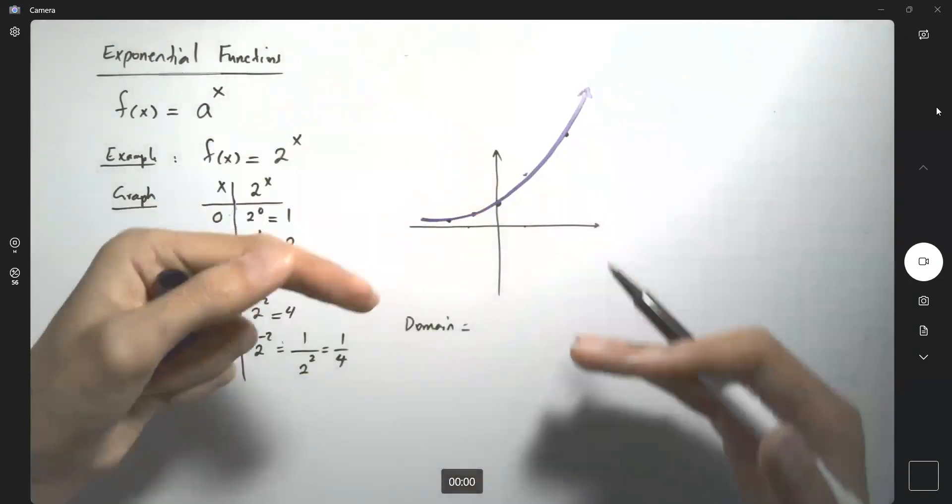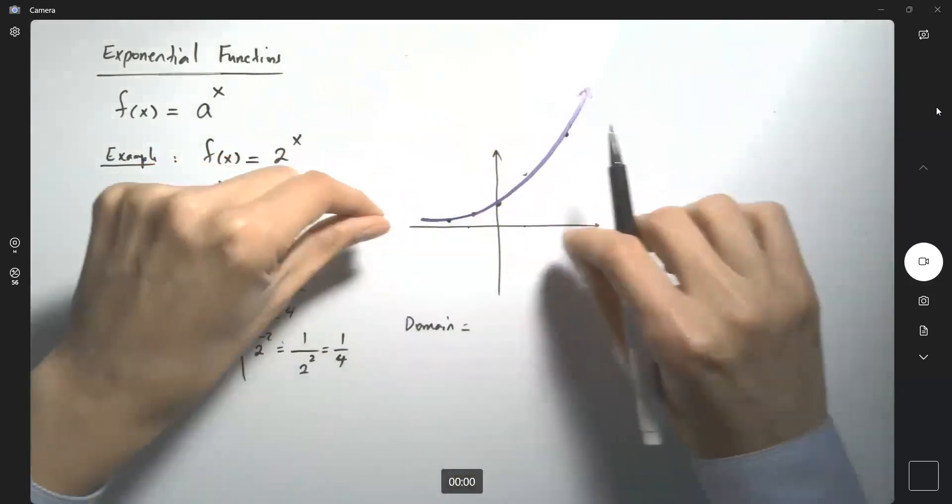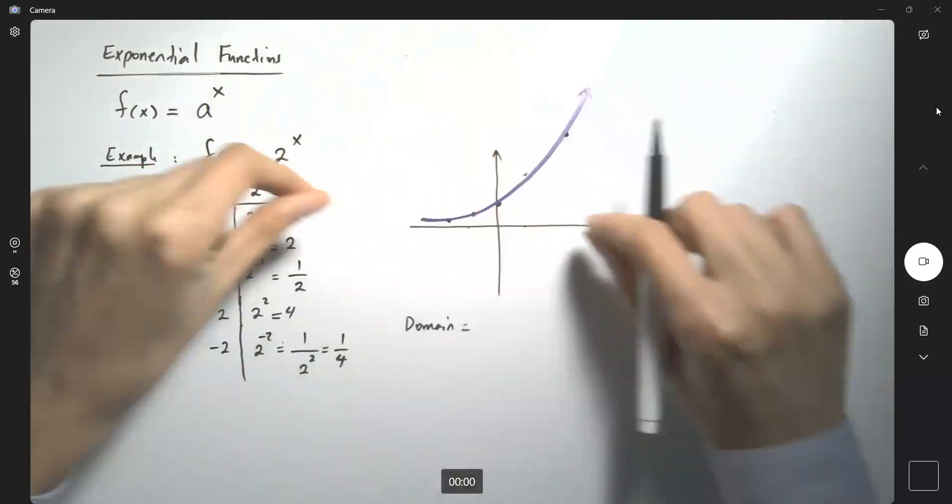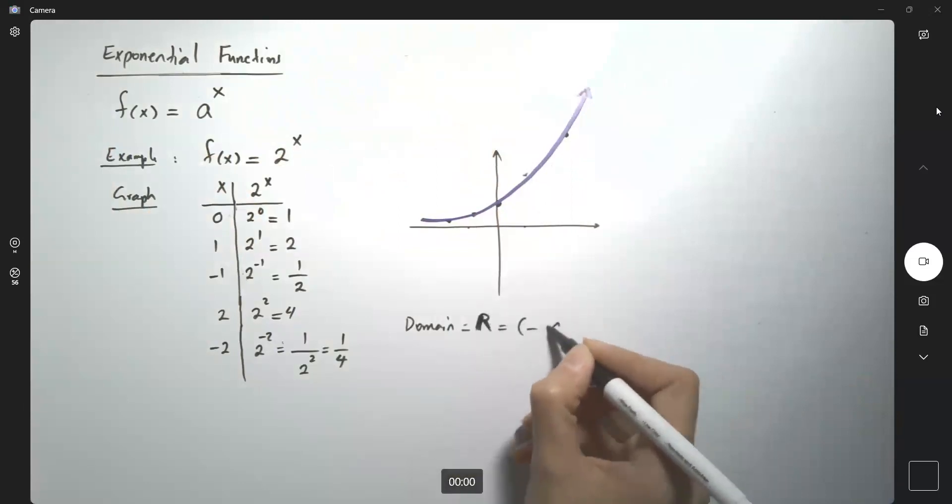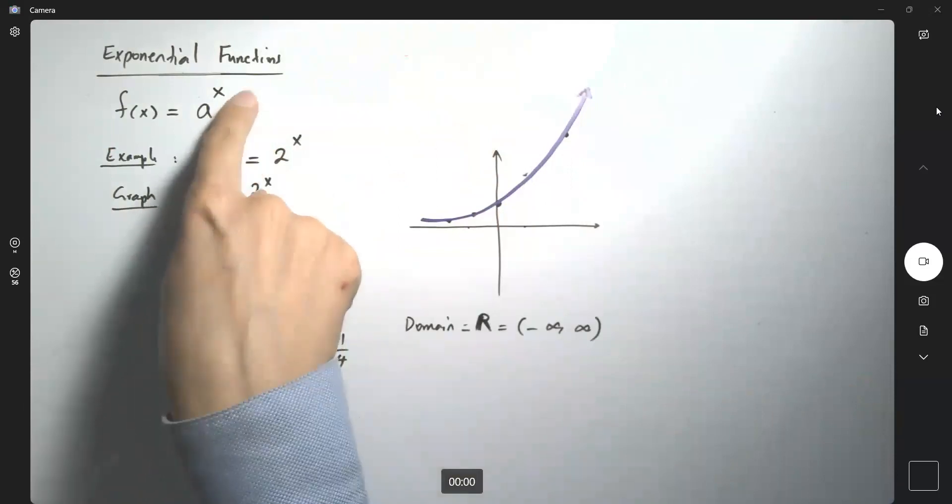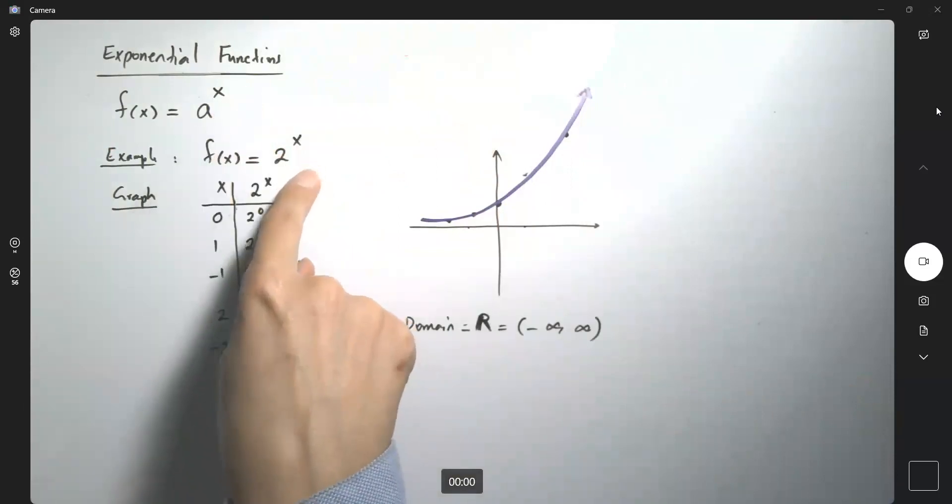So if you extend the graph on the x-axis, it's going to cover everything on the x-axis. Domain is R or negative infinity to positive infinity. This is a^x where a is larger than 1.